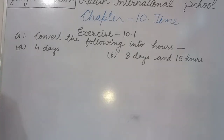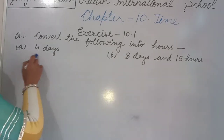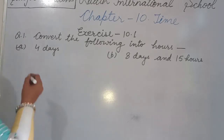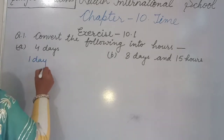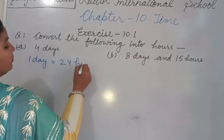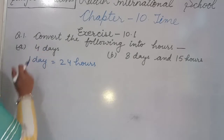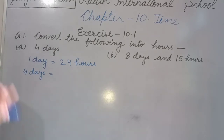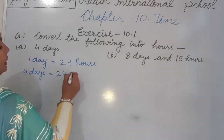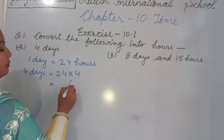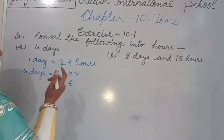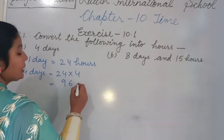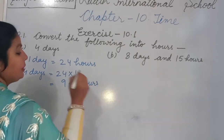As we know, 1 day equals 24 hours. Part A: Convert 4 days into hours. So 4 multiplied by 24: 4 fours are 16, carry 1; 4 twos are 8, plus 1 is 9. The answer is 96 hours.